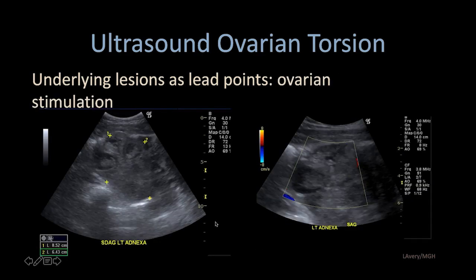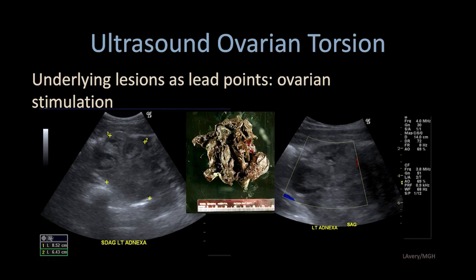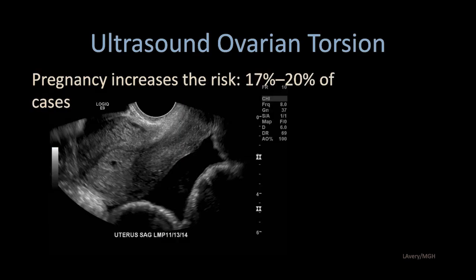Here we have a patient who had recently undergone ovarian stimulation for infertility and egg harvest. You see multiple follicles expected in a patient who had undergone egg retrieval with hemorrhage within them, and a very enlarged ovary as expected with recent stimulation. However, in this case there was no blood flow. We were concerned for ovarian torsion, and unfortunately this was a necrotic ovary at surgery. So ovarian stimulation is also a possible precursor for ovarian torsion.